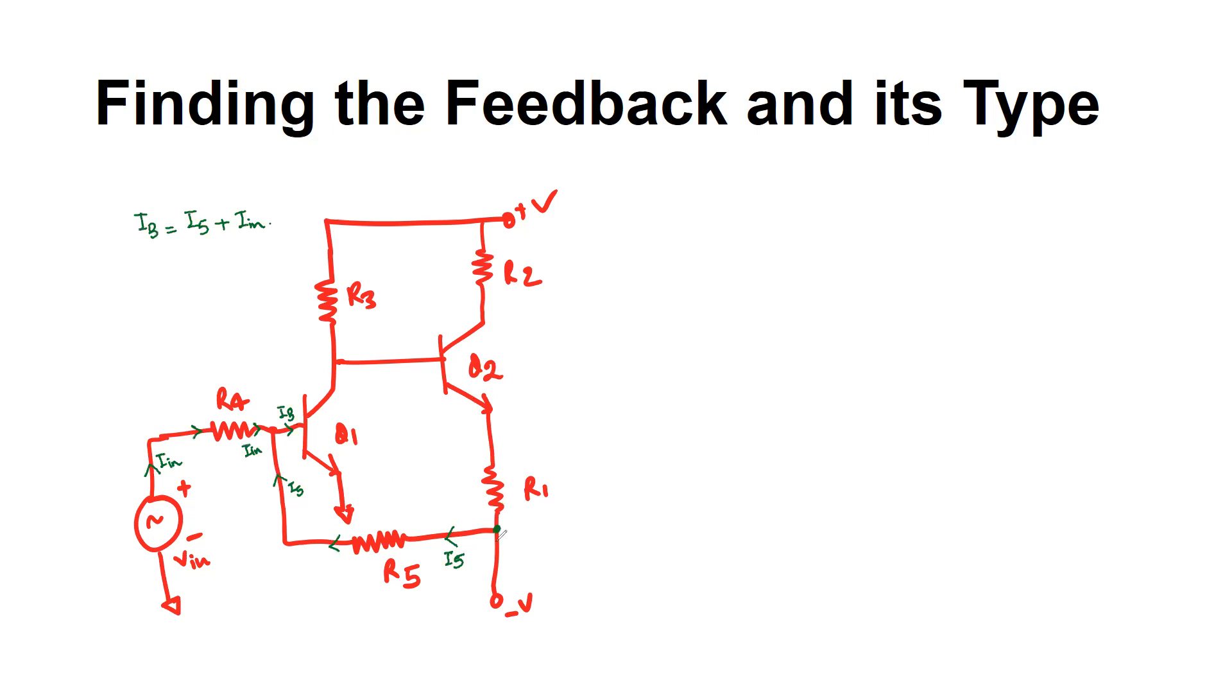And the feedback that you have used through this resistor R5 is called current shunt feedback.